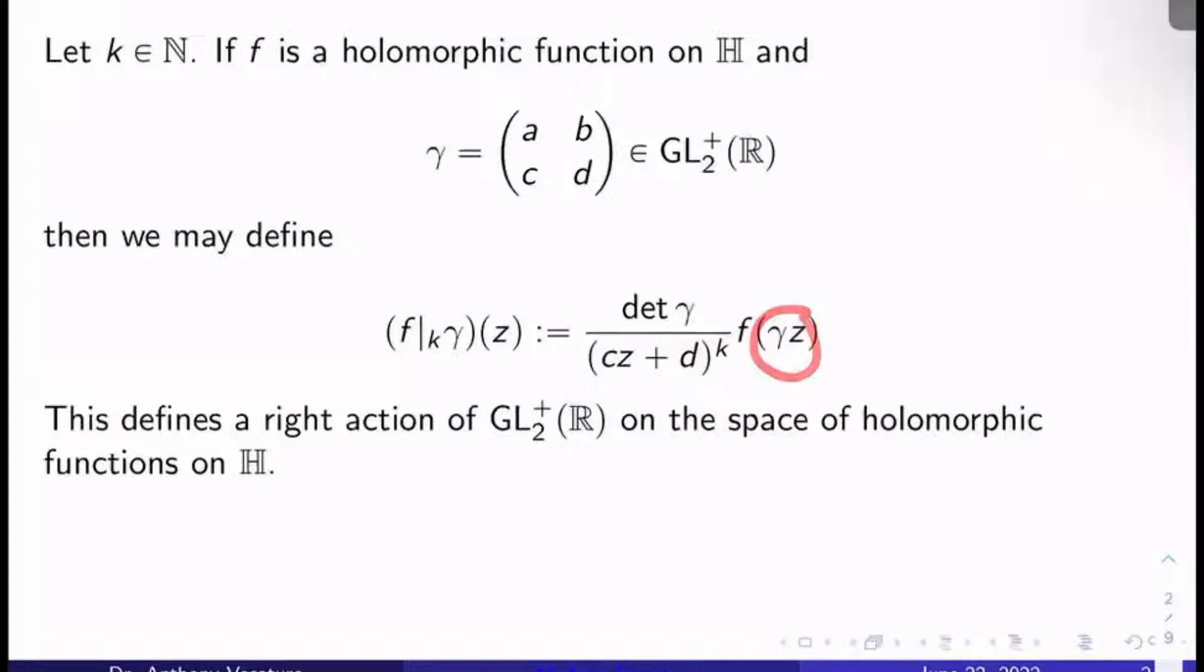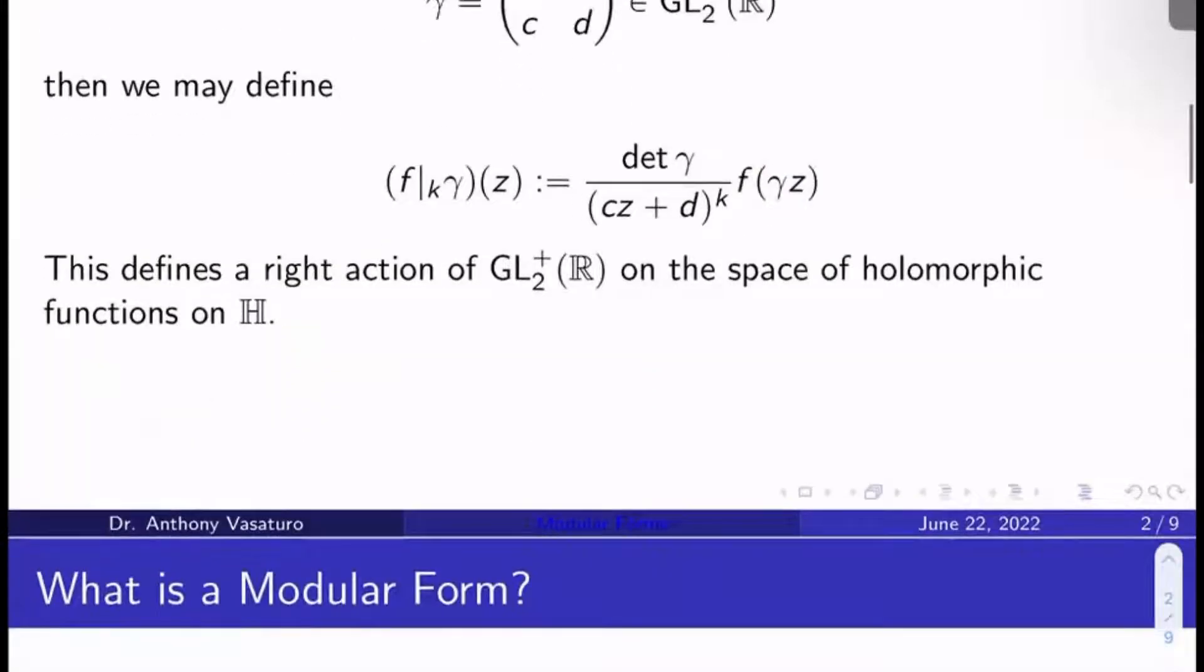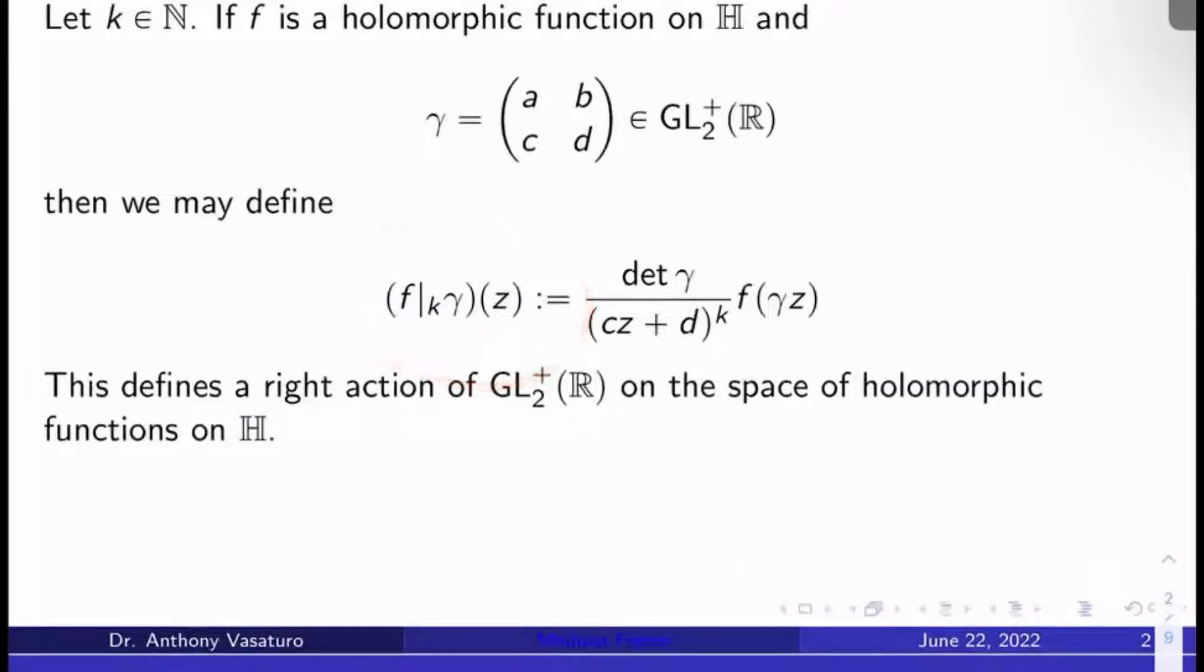We defined gamma z last time. It's action by fractional linear transformation. This f bar sub k guy here, this defines a right action of GL_2^+(R) in the space of holomorphic functions on H. In other words, it takes in a holomorphic function on H and spits out another one.